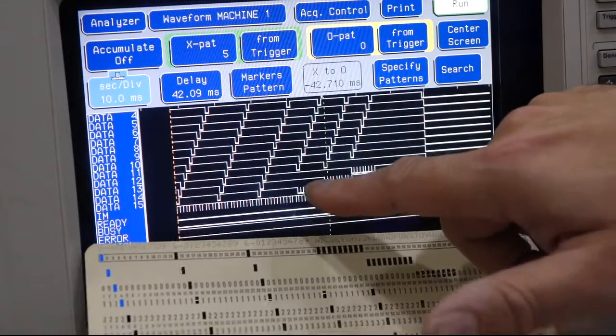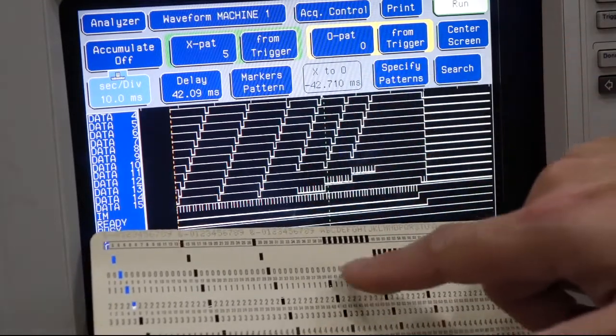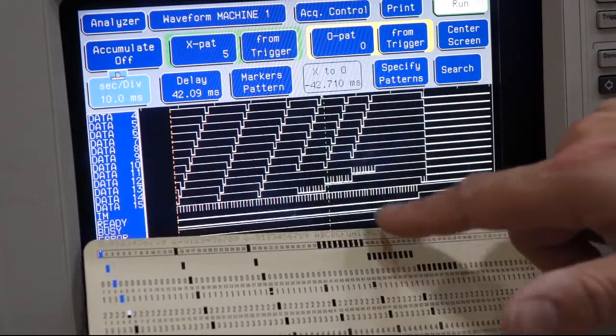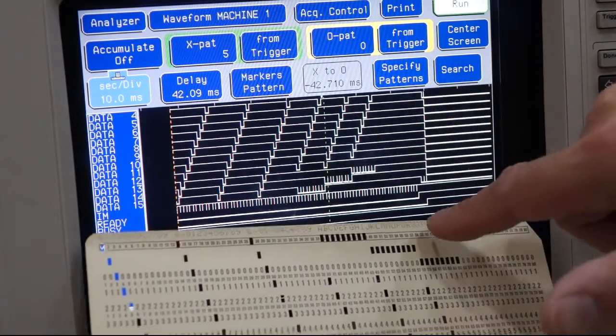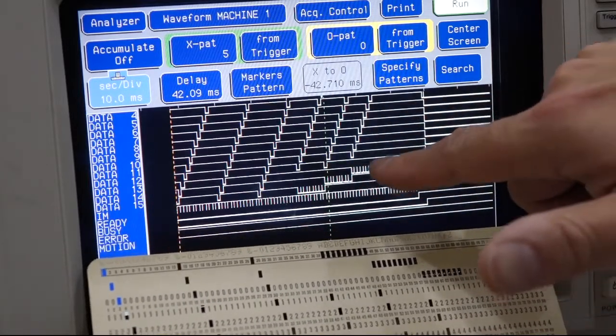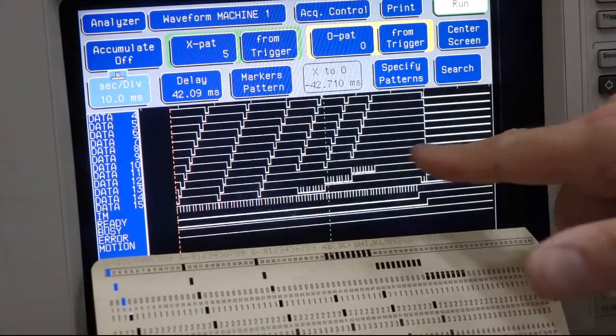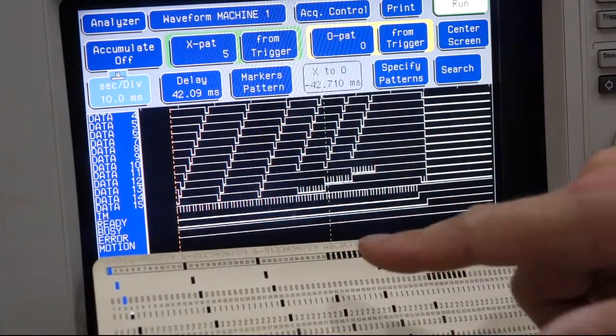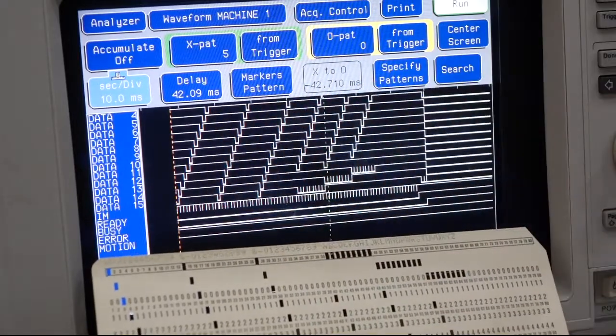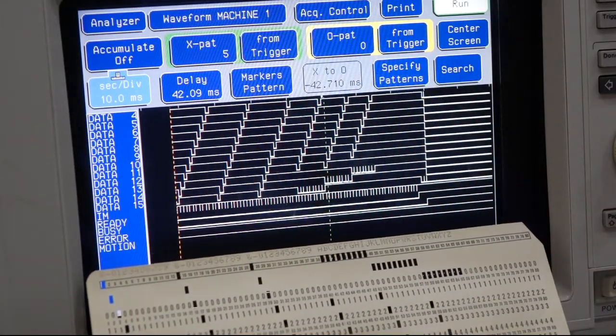And now it's doing the alphabet A to H, I to whatever R, and all the way up to Z. So it's checking all the columns, it's checking all the bits within the columns. And so the reader is repaired.